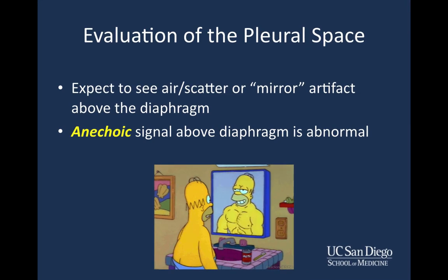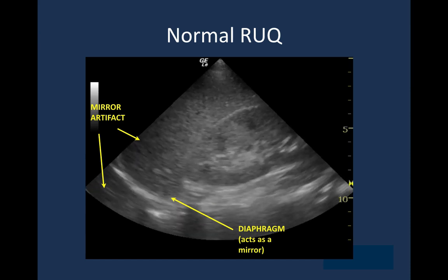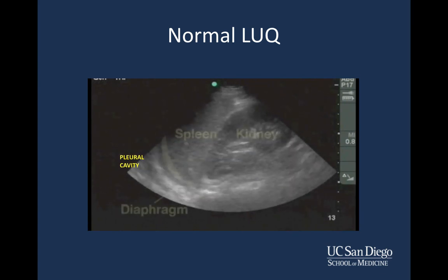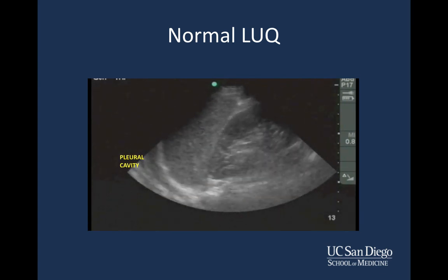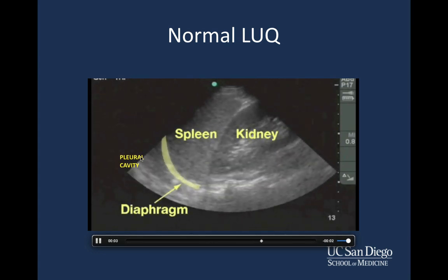When evaluating the pleural space, you expect to see air or scatter — what we call mirroring artifact — above the diaphragm. Normally, lung is not something you see discretely on ultrasound, so above the diaphragm you expect to see something that looks similar to liver or spleen. If you get anechoic signal above the diaphragm, that's abnormal — it indicates you have fluid above the diaphragm, which in the setting of trauma is very concerning for blood or hemothorax. In a normal right upper quadrant, you have mirroring artifact so it looks like liver on both sides of the diaphragm. In the normal left upper quadrant, above the diaphragm you see something similar to spleen parenchyma — no big black stripe, which if present would be abnormal.